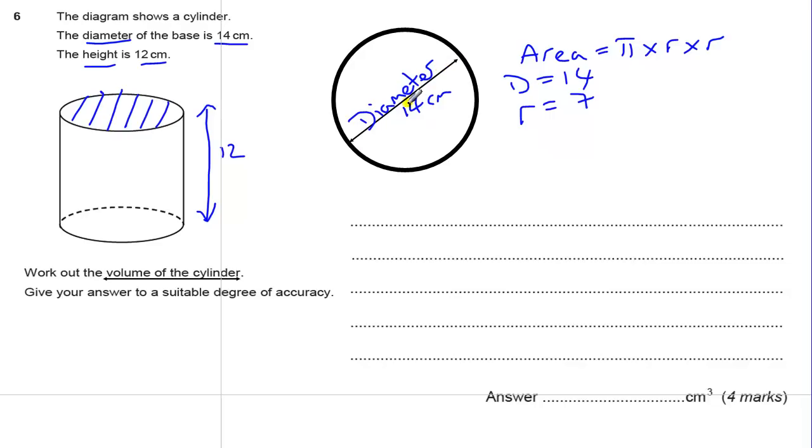The diameter is all the way across the circle, the radius is halfway. So the area is going to be pi times 7 times 7, which is 49π.